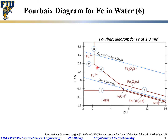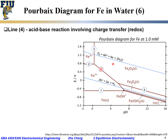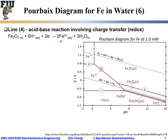Now let's look at another line — Line 4 for this Pourbaix diagram. Line 4 separates Fe²⁺ and Fe₂O₃. It is an acid-base reaction but involves charge transfer, or involves a redox reaction. The half-cell reaction I'm going to write here would be something like this: Fe₂O₃ combined with 6 protons and 2 electrons to form Fe²⁺ and 3 water molecules.